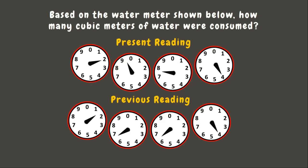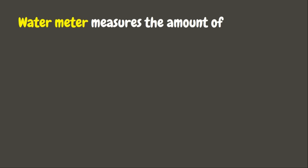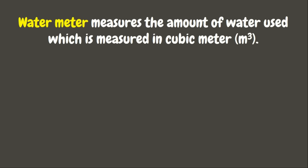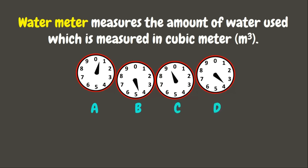Now let's have another example. Based on the water meter shown below, how many cubic meters of water were consumed? The water meter measures the amount of water used, which is measured in cubic meters. Unlike the electric meter, the water meter has only four dials and only moves clockwise.